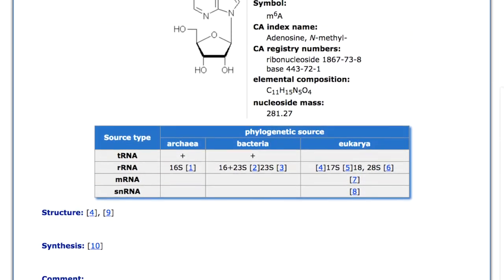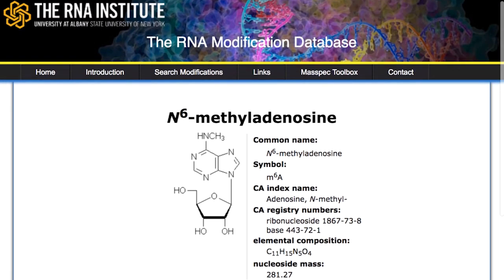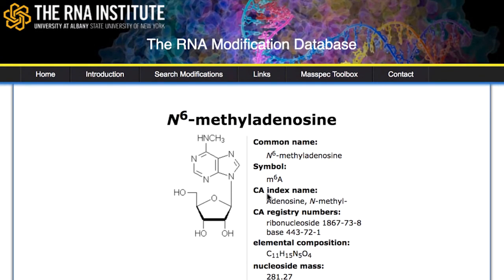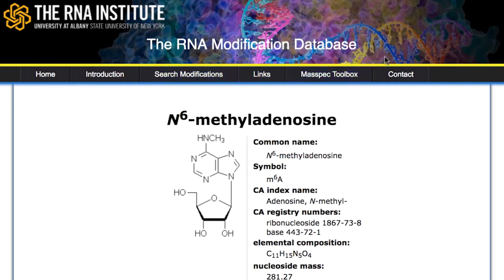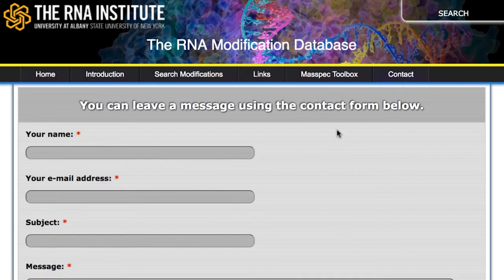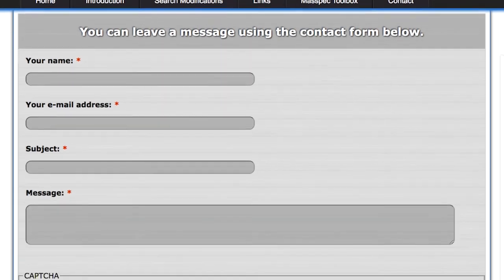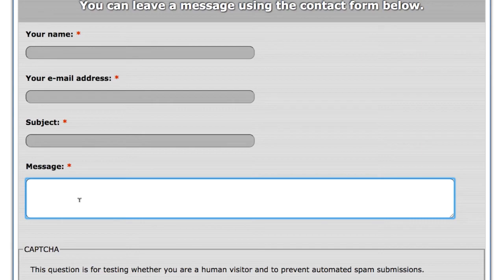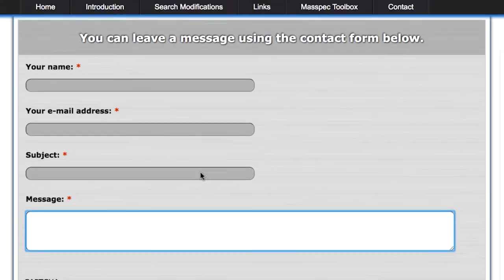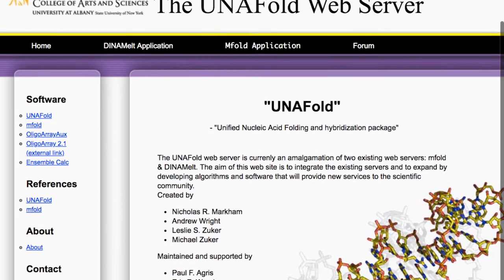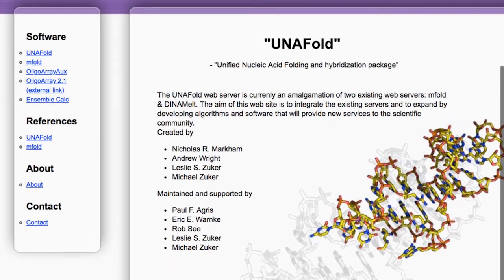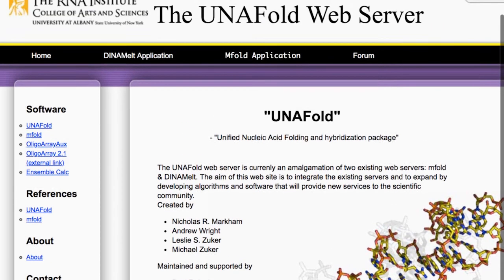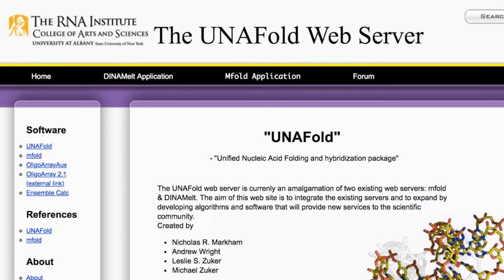When we come across a publication about a new modification, or are contacted by the authors of a publication detailing the structure and chemistry of the modification, along with its natural occurrence, we add the modification to the database. To help us enter new modifications, researchers should go to the database website and follow the contact information. We would appreciate a detailed message. Importantly, the RNA Modification Database is accompanied by Unifold, the most used and trusted secondary structure program for folding of RNAs. Modified nucleosides will enter Unifold when we have the force field parameters, so that their influence on RNA folding can be assessed.